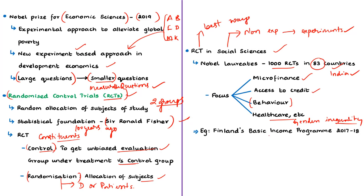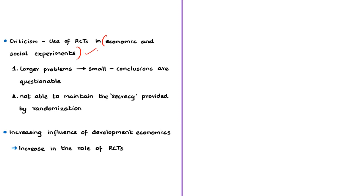Consider the basic income experiment of Finland, conducted in 2017-18. A few unemployed Finns between the age group of 25 to 58 years were randomly selected across the country and paid a monthly amount instead of basic unemployment benefits. The outcomes were then compared with a control group of individuals not selected, to know the effectiveness of the scheme.